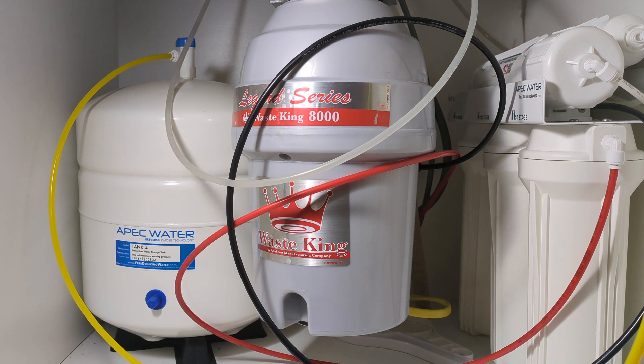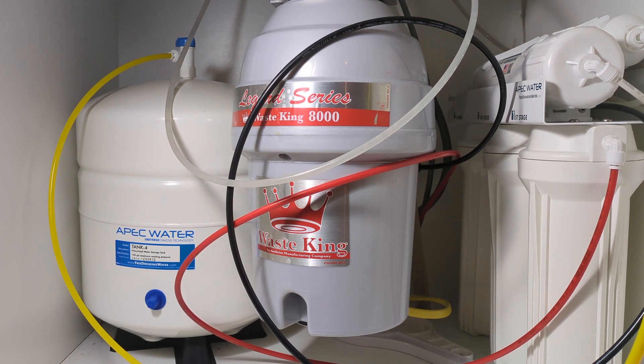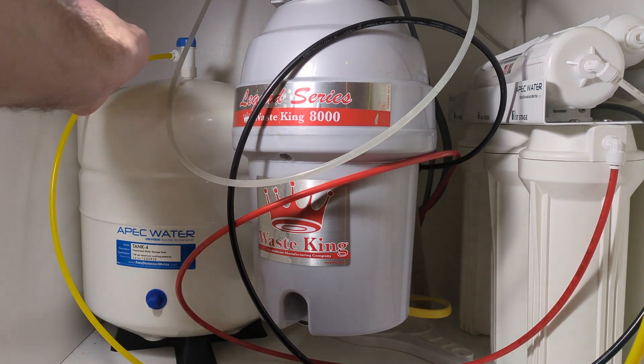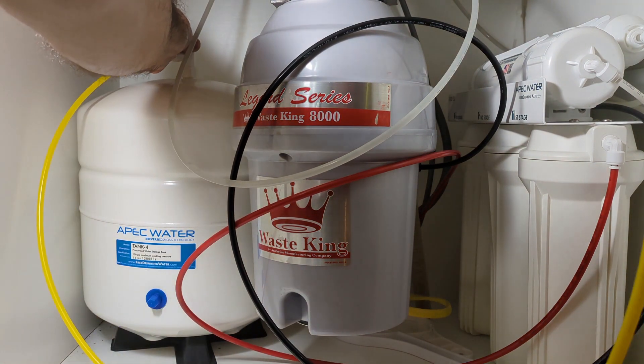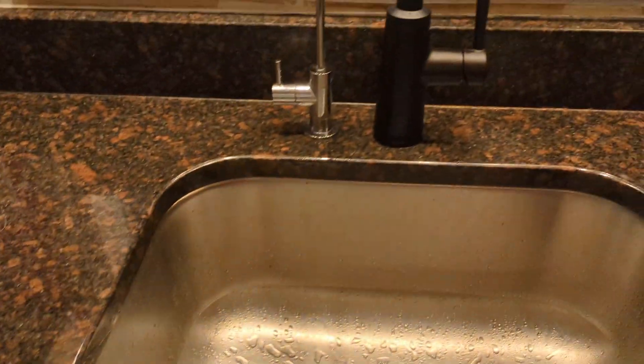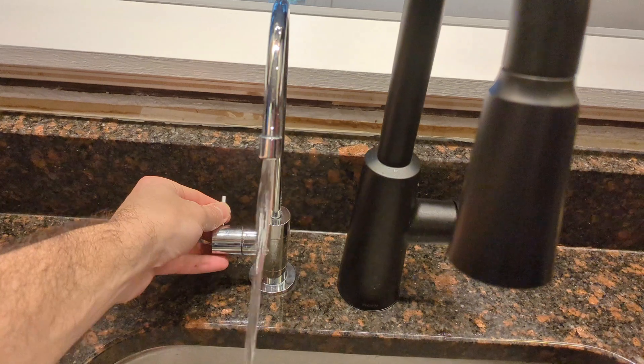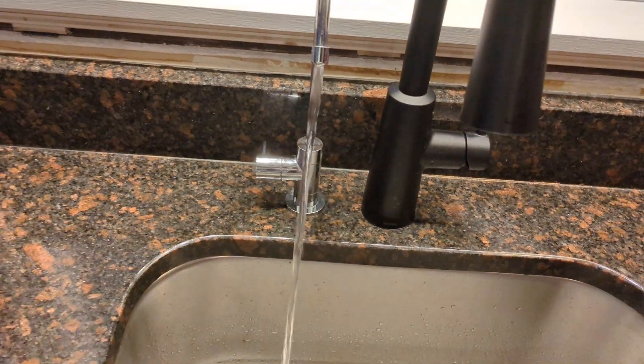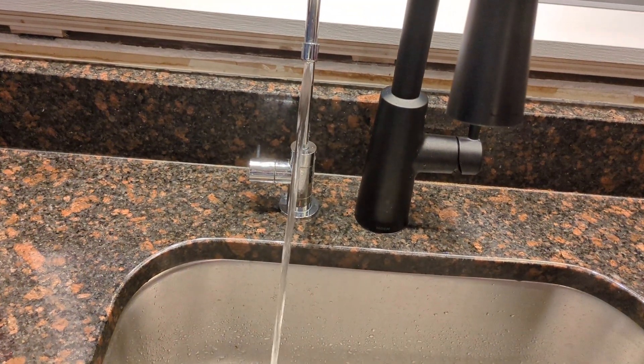Finally last step. Now that water's been running for 10 to 15 minutes, turn off the beverage faucet, open up the valve on the tank. And now we should have nice pressurized water there. Still getting some air out.